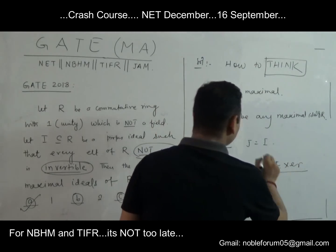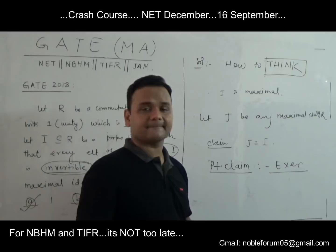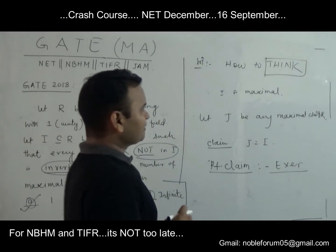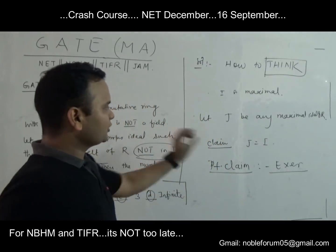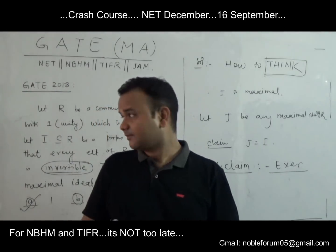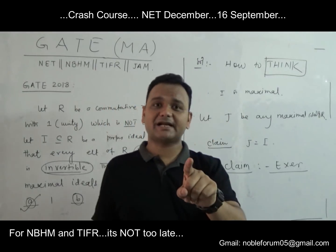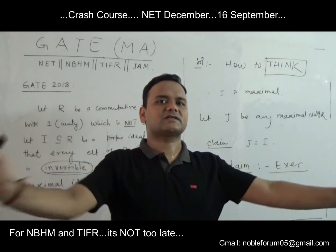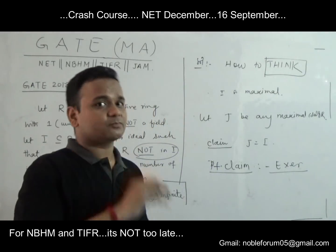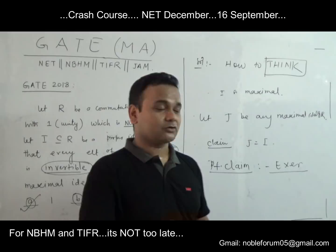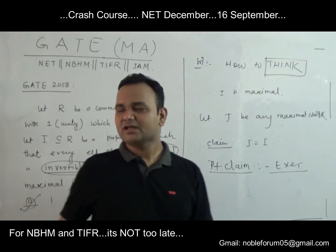I would like you to try this exercise first. The hint is: use the maximality of both I and J. If J is not equal to I, use the concept that in a commutative ring with unity, two distinct maximal ideals lead to a contradiction. The answer is one maximal ideal. If you cannot solve it, write in the comments and I will make another video. Thank you for watching.